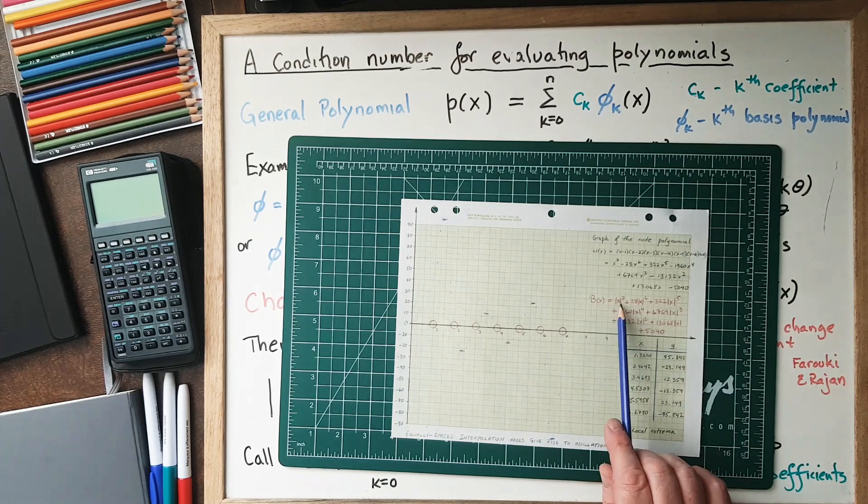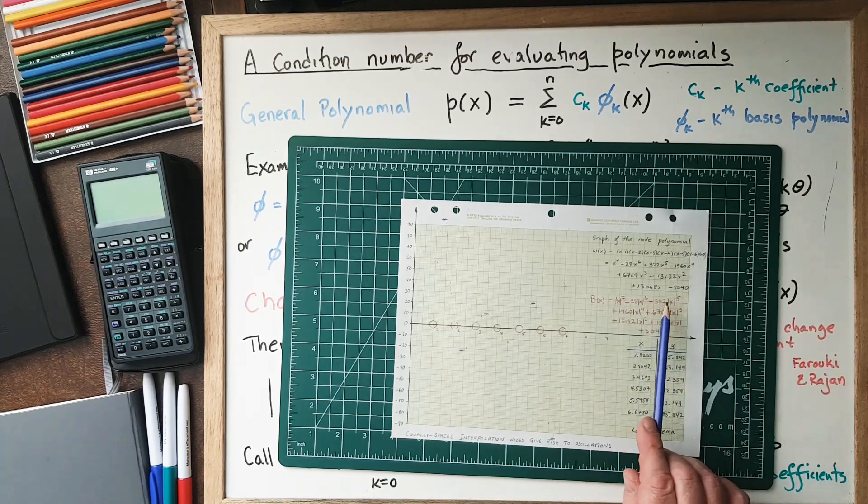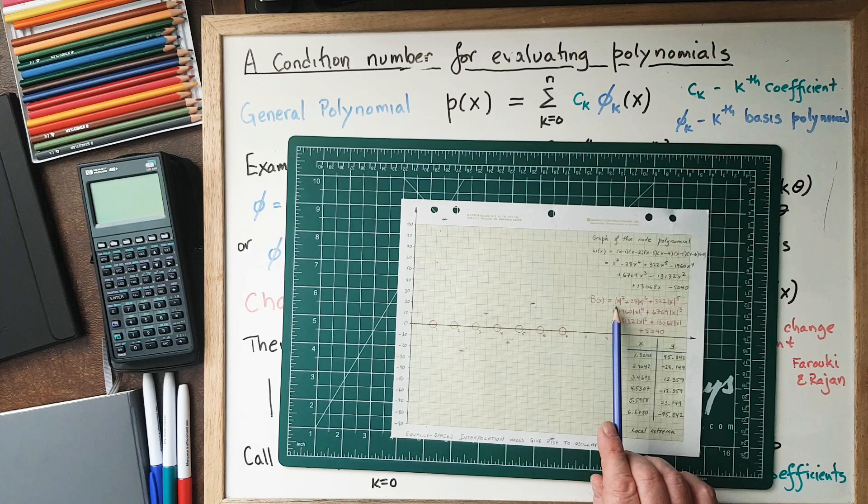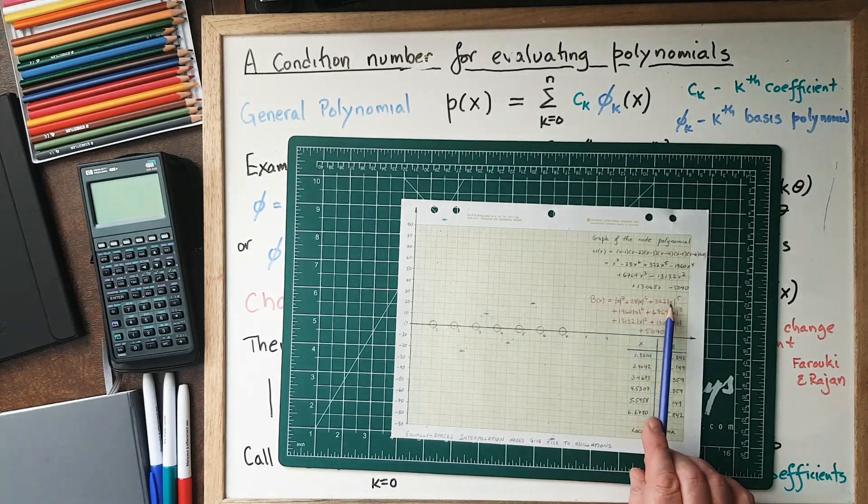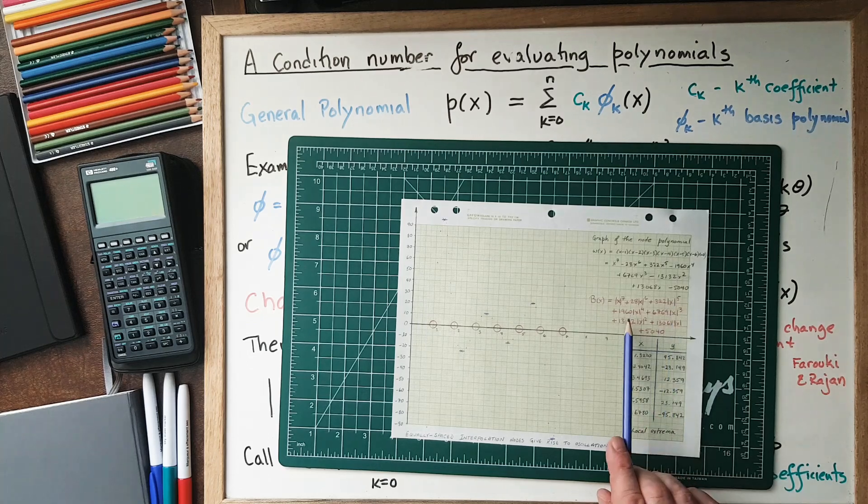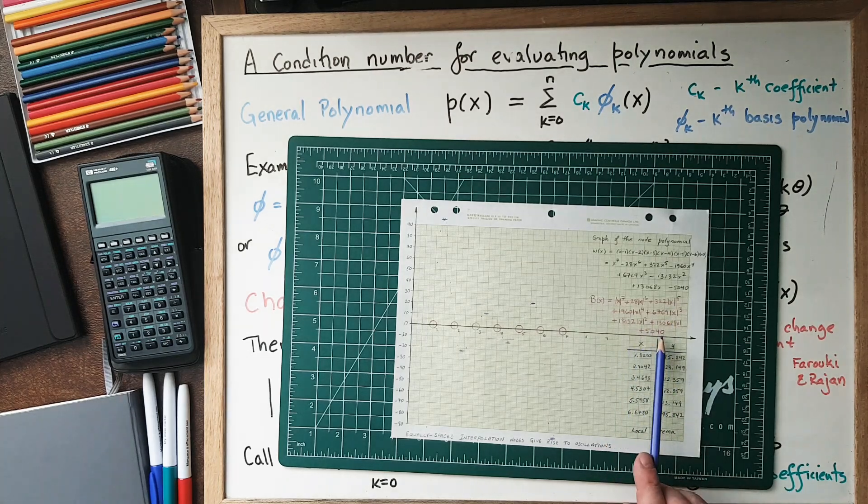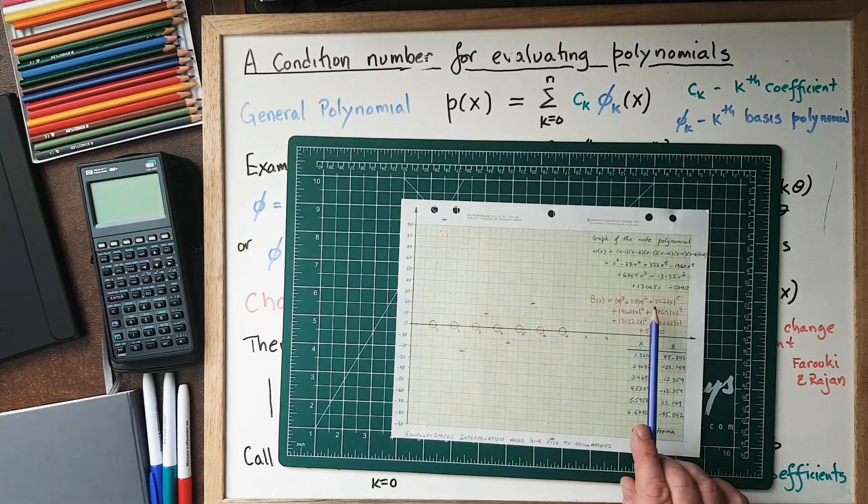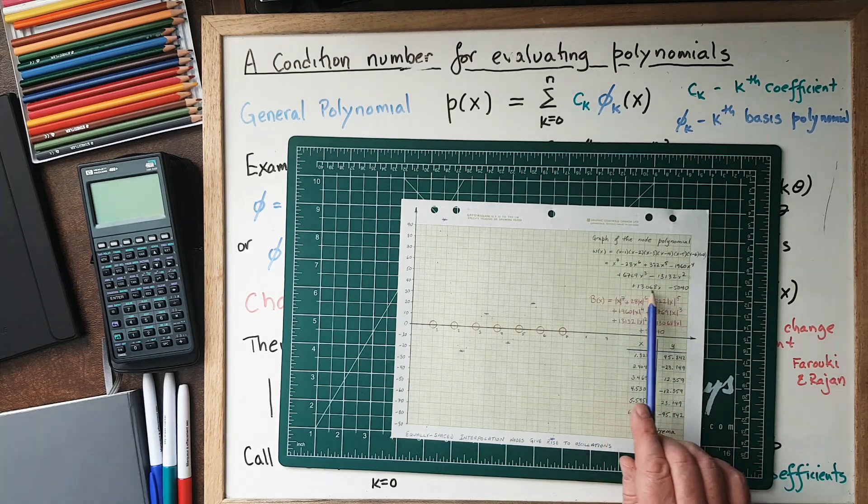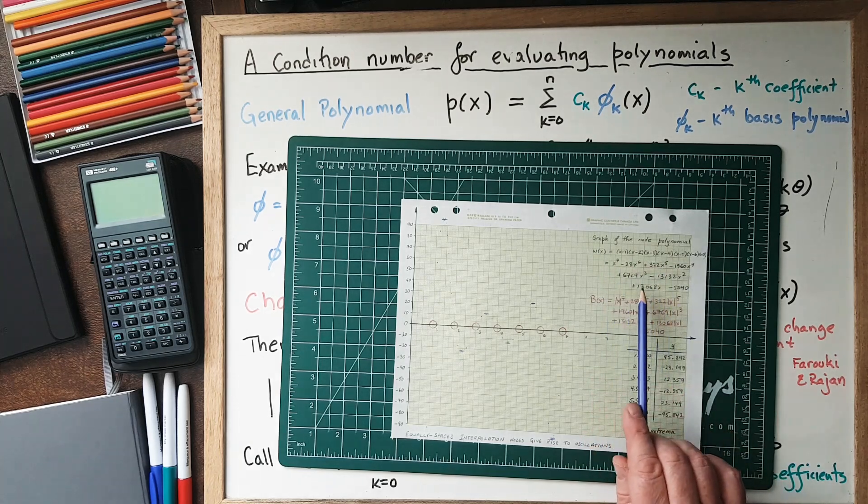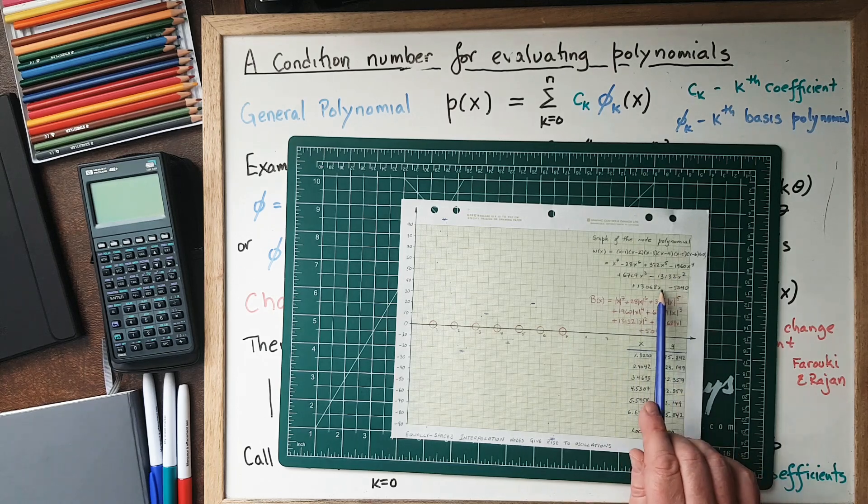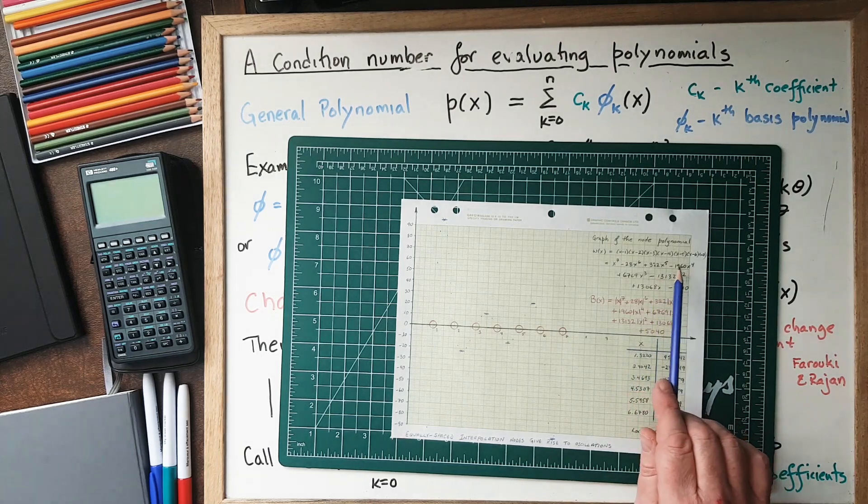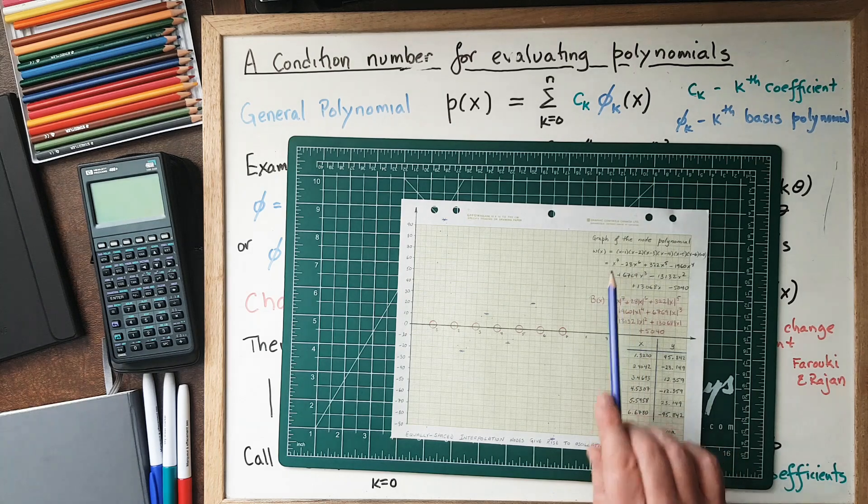The B(x) you get by taking the absolute values of everything: absolute value of x^7 plus 28 times x^6 plus 322x^5, etc. So all plus signs. There's the B(x) that goes with this node polynomial expressed in the monomial basis: 1, x, x², x³, x^4, x^5, x^6, and x^7.